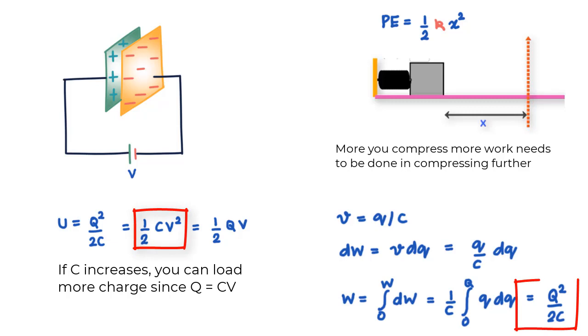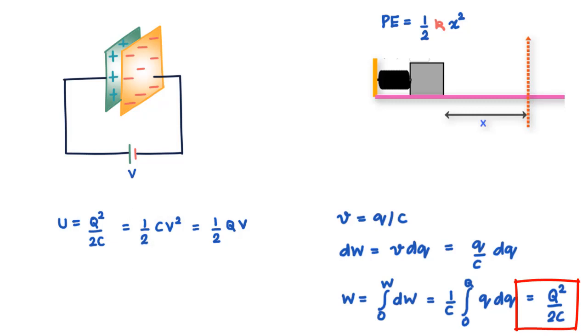Two, you can infer from this equation that if you are asked to transfer charge Q from one plate to the other, the amount of work to be done would be less if the capacitance C of the capacitor is more, considering C is in the denominator. So the higher the capacitance, the easier it is to load up a fixed amount of charge on the capacitor.